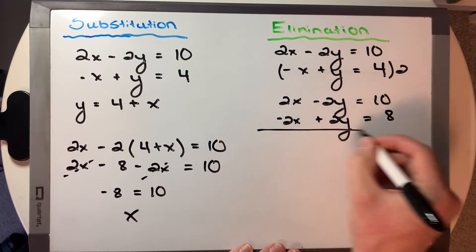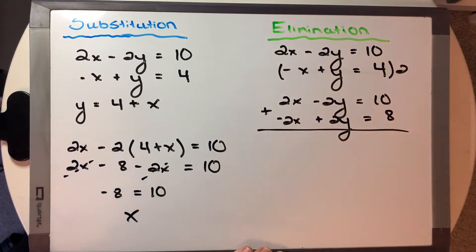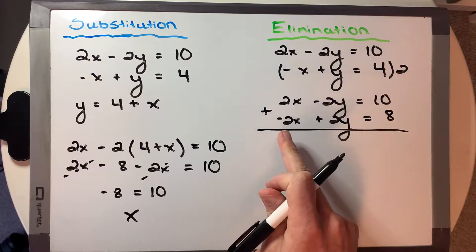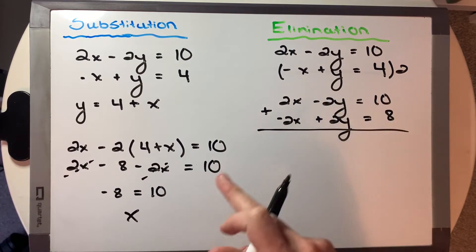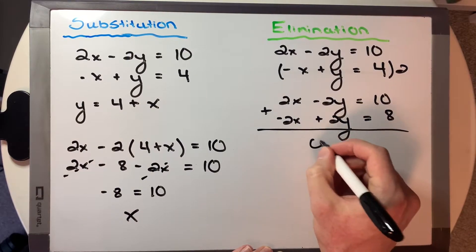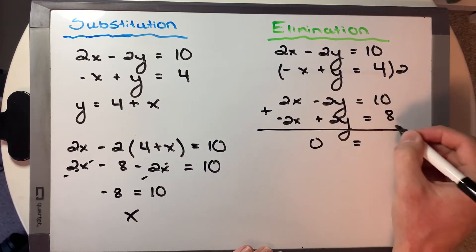Okay, and now if we add these two equations together, we see that 2x plus a negative 2x will equal 0. Negative 2y plus a 2y will equal 0. So we have 0 on this side is equal to 10 plus 8, which is 18.